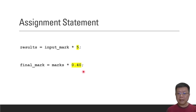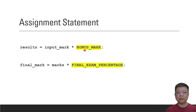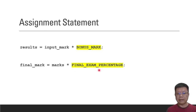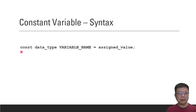If 0.40 is a fixed value, we recommend using something called constant variables. Constant variables mean you don't have to change or redefine the value each time — you define it once at the top of your main program and use it throughout. So 5 might be represented by BONUS_MARK, and 0.40 assigned to FINAL_EXAM_PERCENTAGE. This makes your code much clearer when you refer back to it later.